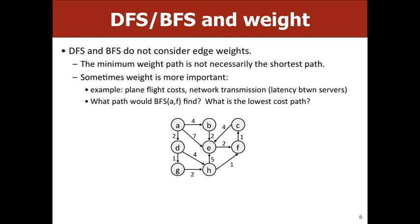I've been alluding to this idea of a weighted graph and finding the shortest cost path. A good real-world example: sometimes instead of flying non-stop from here to New York, it might actually be cheaper to stop in Chicago. So if you care more about money versus time, you might want to stop in Chicago and save a couple hundred dollars. Does anyone have other examples of real-world graphs where edge weights matter?